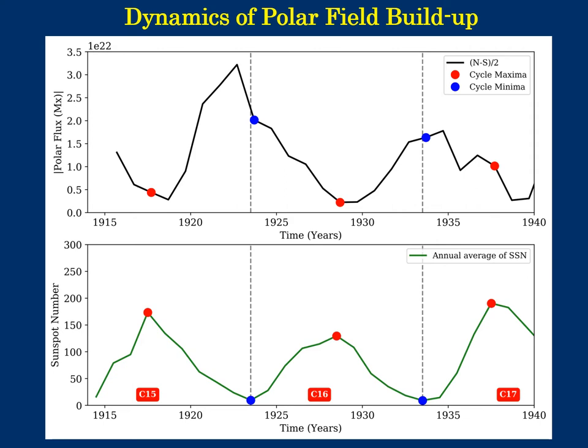In this plot, the top panel shows the variation of the hybrid polar flux. In order to focus on the dynamics of the polar field, I chose to plot a section of the whole time series. In the bottom, the co-temporal sunspot time series is plotted. The filled red circles indicate the solar maxima and the blue ones denote the minimum. The polar flux grows in a phase where the total flux of the solar cycle is declining. The polar field growth rate can be calculated by looking at the polar flux at the solar cycle maximum and minimum.